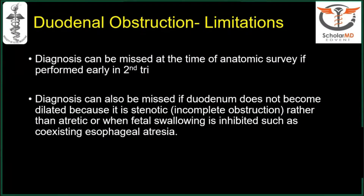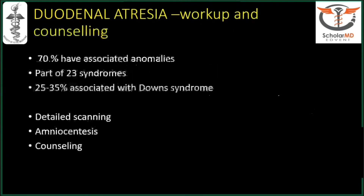Limitations for duodenal obstruction diagnosis: it can be missed at the time of anatomic survey if performed early in the second trimester — especially in India where TIFA scans are performed at around 18-19 weeks. Diagnosis can also be missed if the duodenum does not become dilated because it is stenotic rather than atretic, or when fetal swallowing is inhibited because of coexisting esophageal atresia. Regarding workup and counselling: 70% have associated anomalies, it is part of 23 syndromes. Most importantly, 25-35% of duodenal atresias are associated with Down syndrome — this is a major marker for trisomy 21 — so amniocentesis and karyotype are required.